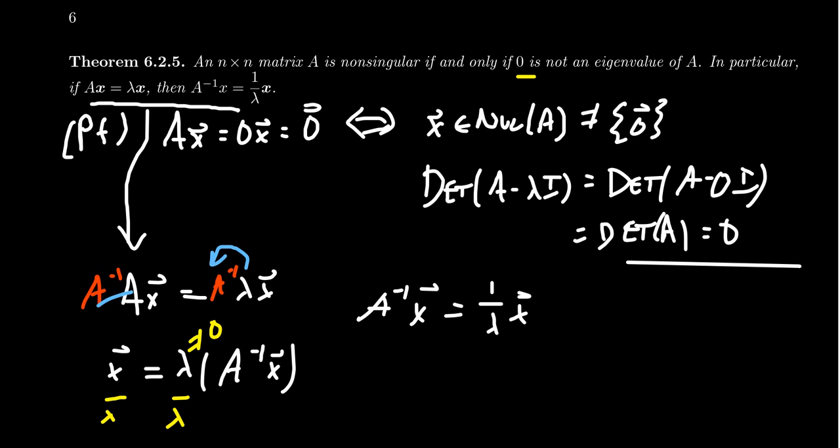And you end up with the very important observation that A inverse X equals 1 over lambda X. So if a matrix is non-singular, the eigenvalues of the inverse matrix will be the reciprocals of the eigenvalues of the original matrix, which is a really neat observation.